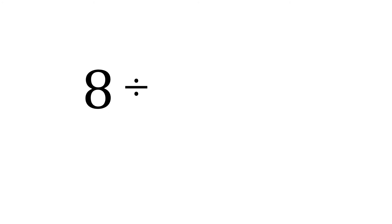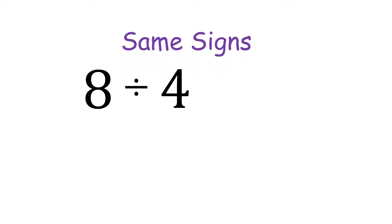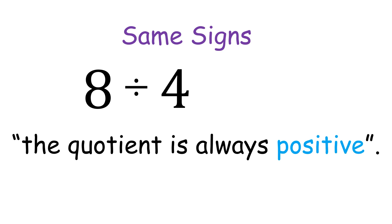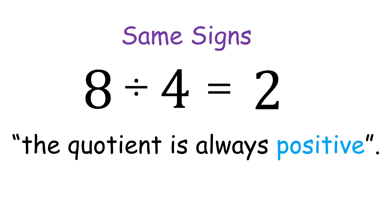Let's use the previous examples. Positive 8 divided by positive 4 — they have the same signs, so the quotient is always positive. 8 divided by 4 is 2, and it is positive.